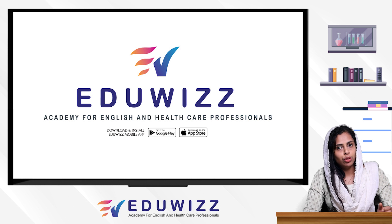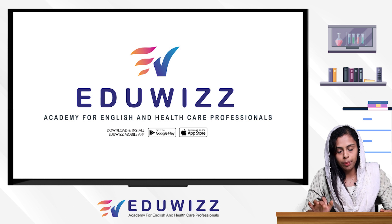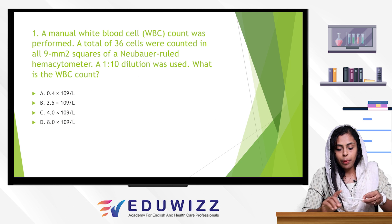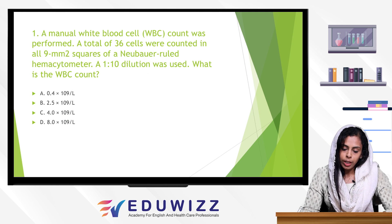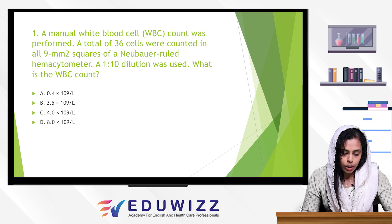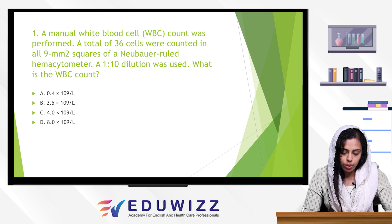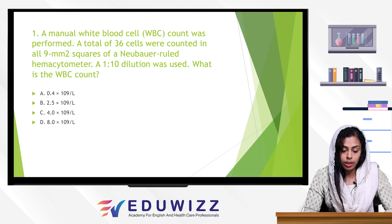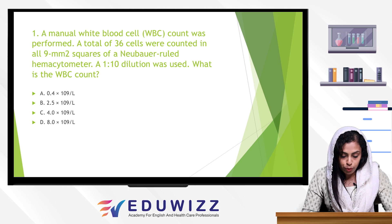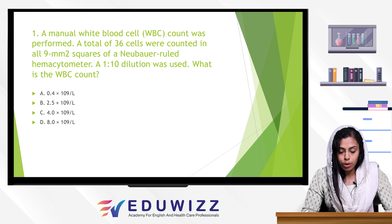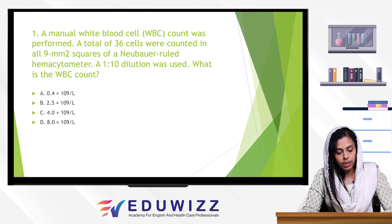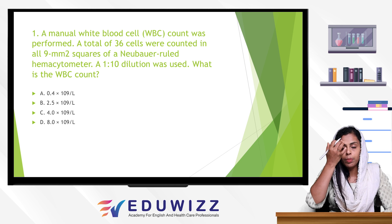Now, we are going to have a question in the discussion. First one: a manual white blood cell count was performed. A total of 36 cells were counted in 9 mm² squares of Neubauer ruled hemocytometer. A 1 to 10 dilution was used. What is the WBC count?